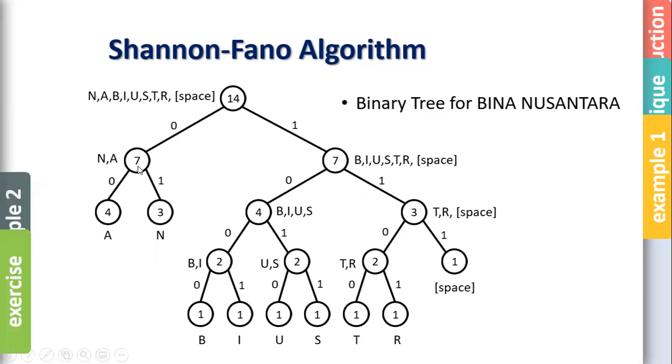Then this 7, you divide it again. Because it only contains two characters. When you divide by two, of course, one is A, one is N. 4, 3. That's it. Because this also only contains one character, stop there. This one still contains seven characters. So you need to divide by two again. Seven divided by two is four with three. Which one that you put on the left, which one on the right, it doesn't matter because all is one. In this example, I put B, I, U, S on the left, TR space on the right.